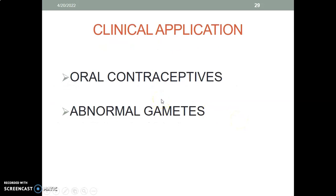Gametogenesis also helps you understand the importance of contraception to prevent pregnancy. If you use a barrier type like condoms, you are able to prevent the sperm from reaching the egg, meaning fertilization will not occur. Remember, fertilization is what completes meiosis II of the ovum. We also have abnormal gametes — for example, sperms with many heads or many tails, sperms that are not motile, or sperms that move in circles and will never reach their target. For eggs, a woman can have poor quality eggs or low numbers. All these are clinical applications of gametogenesis.